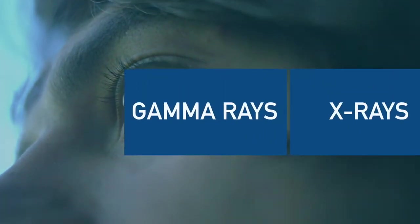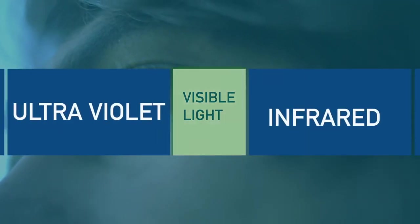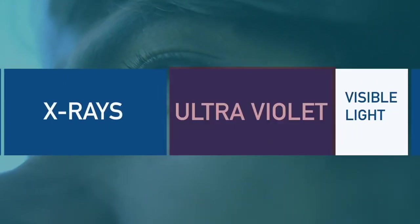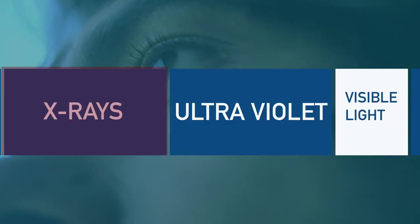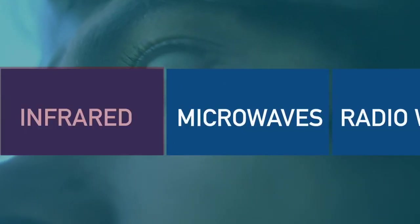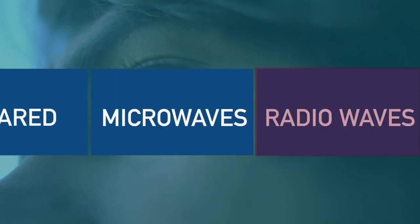The human eye can only see a very small part of the electromagnetic spectrum. At one end of the spectrum, we cannot see gamma rays, ultraviolet light and X-rays. While at the other end, our eyes cannot see infrared, microwaves or radio waves.